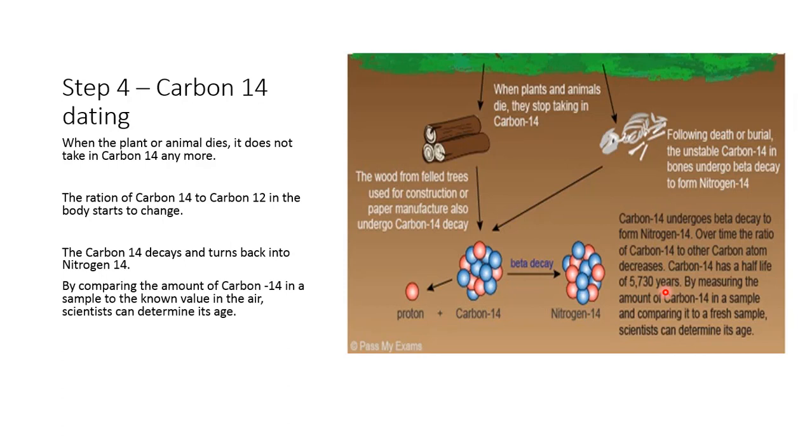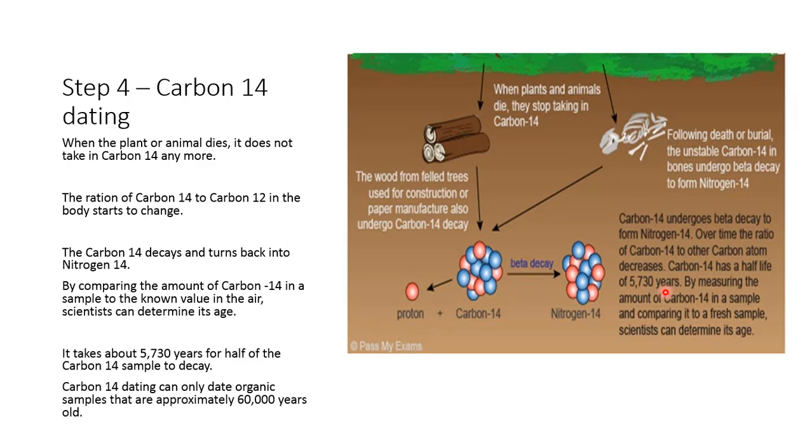By comparing the amount of carbon-14 in a sample to the known value in the air, scientists can determine its age. It takes roughly 5,730 years for half of the carbon-14 to decay. Carbon-14 dating can only date organisms back to about 60,000 years. And the reason for that is the amount of carbon-14 in the living things is very small, so pretty quickly it deteriorates out. And so about after 60,000 years, there's just not enough sample size to have anything to date.